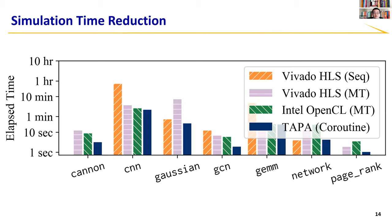This slide shows the software simulation time of the sequential, multi-thread, and TAPA's coroutine-based simulators in logarithmic scale. The sequential bars are missing for some benchmarks because sequential simulation does not work correctly for them. The Gaussian benchmark bar is missing for Intel OpenCL because it does not support more than 256 task instances for software simulation. Gaussian has many more task instances than available CPU cores and is communication-intensive, which exacerbates context switch overhead and leads to a more than 10x slowdown comparing multi-thread with sequential or TAPA simulator. On average, the TAPA simulator is 3.2 times faster.